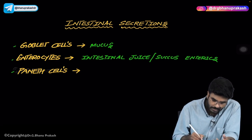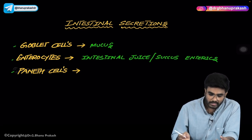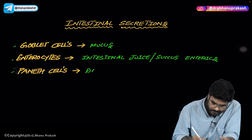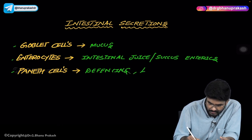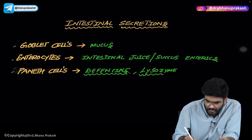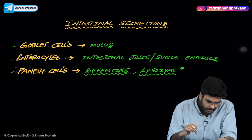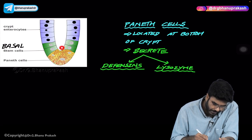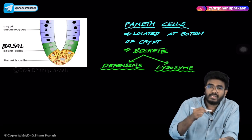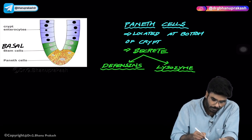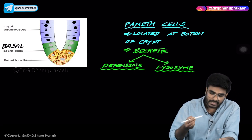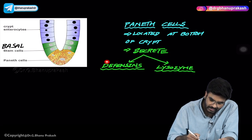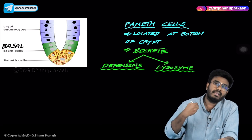Paneth cells are present in the deep part of the crypts of Lieberkühn and are associated with the production of defensins and lysozyme. These are chemicals which protect the body from microbial organisms. Paneth cells are located at the bottommost part of the intestinal crypts, and they secrete defensins and lysozyme, which are antibacterial in nature.